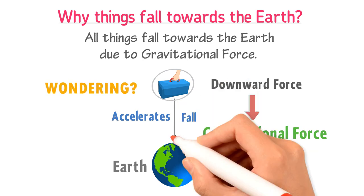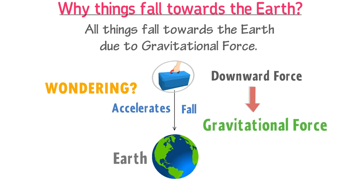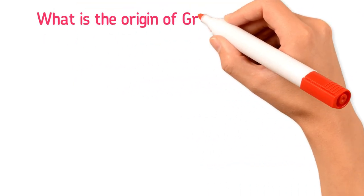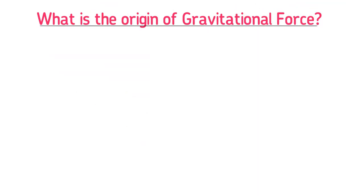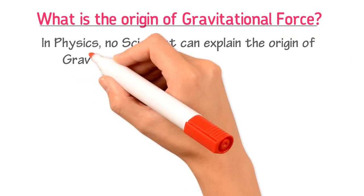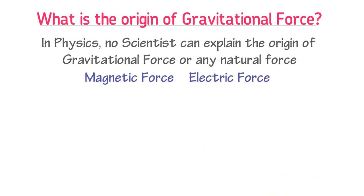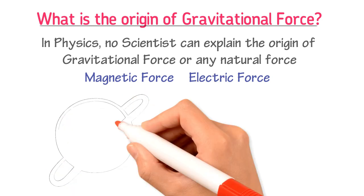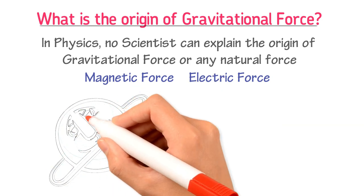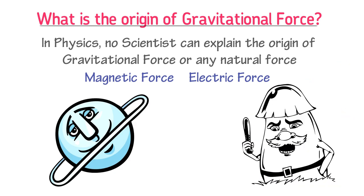You may be wondering why this downward gravitational force exists, or what is the origin of gravitational force. No scientist in physics can explain the origin of gravitational force or any external force like magnetic force or electric force. But different hypotheses and laws exist in physics to calculate gravitational force and gravitational field, which we will discuss in this lecture.